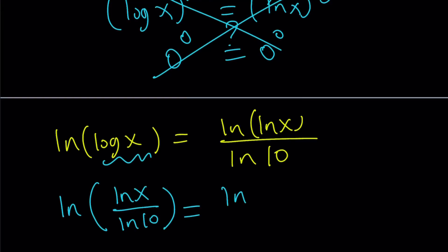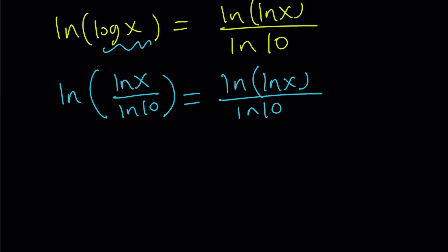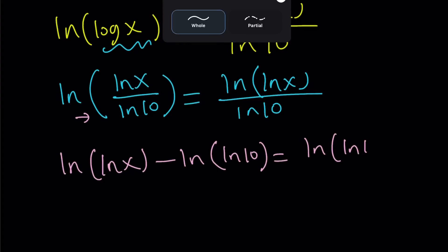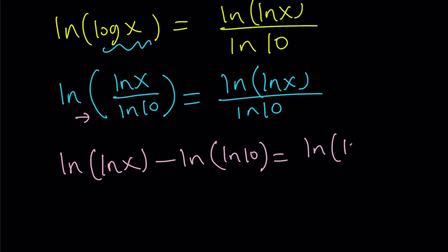So in other words, lnx over log x is always constant. Did you know that? That's kind of cool, too. So this doesn't look better. Oh, come on. But here's what we can do. If you have a quotient, you can apply the rules of logs. And that turns into ln, lnx minus ln, ln10. And that's equal to ln, lnx divided by ln10.